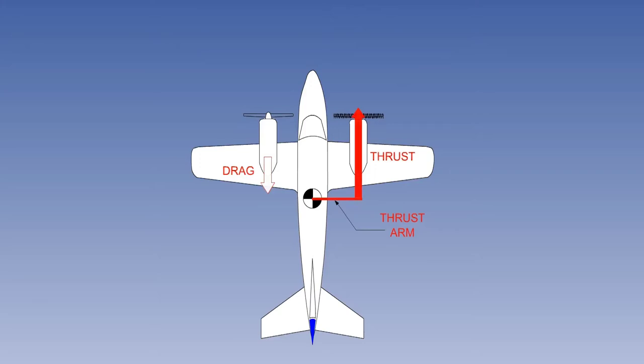The strength of the yawing moment will depend on three factors: how much thrust the engine is developing, depending on throttle setting and density altitude; the distance between the thrust line and the CG, the thrust arm; and the drag from the failed engine.